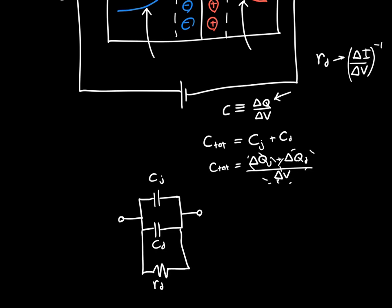So Cd and Rd are both in parallel with each other. And you can go through a more mathematical derivation to show that this is in fact the case. But the mathematical derivation is extremely painful, and so I wouldn't recommend it.